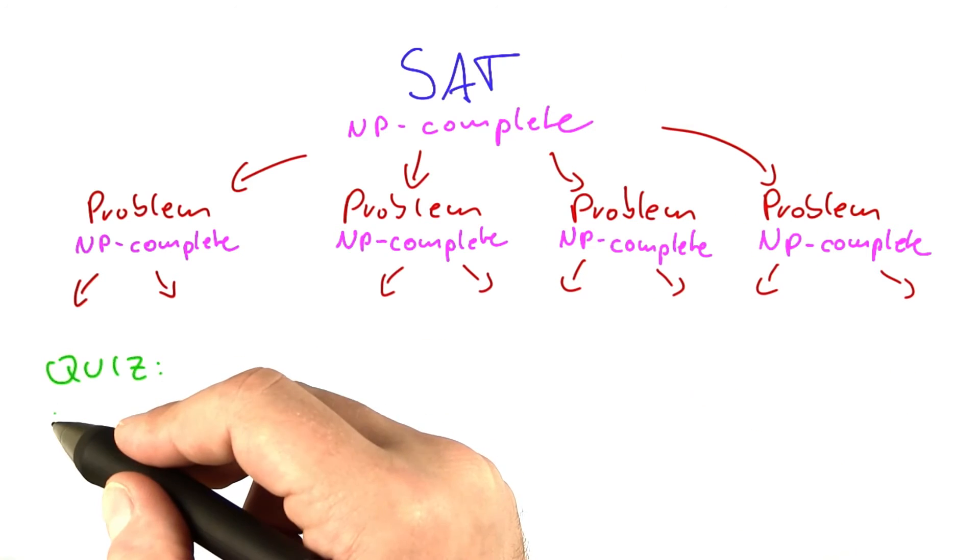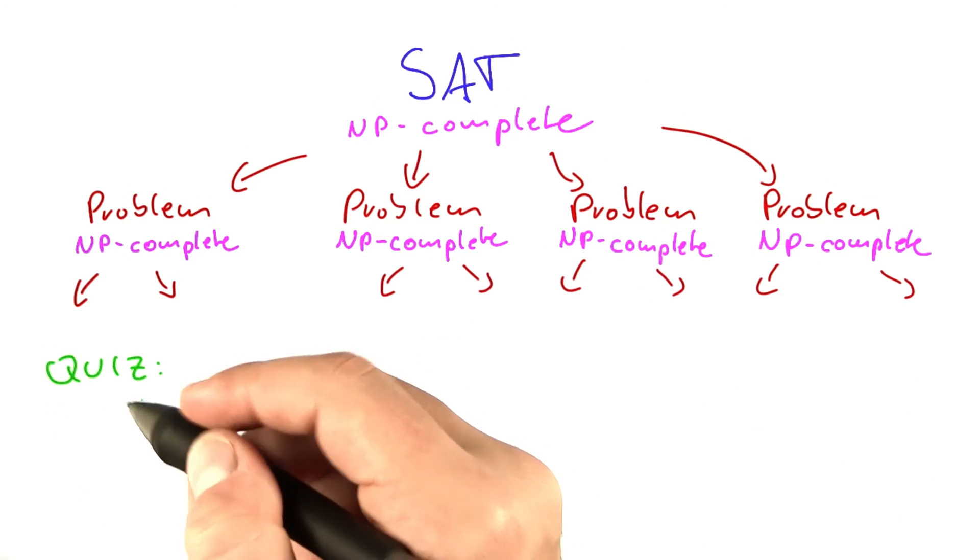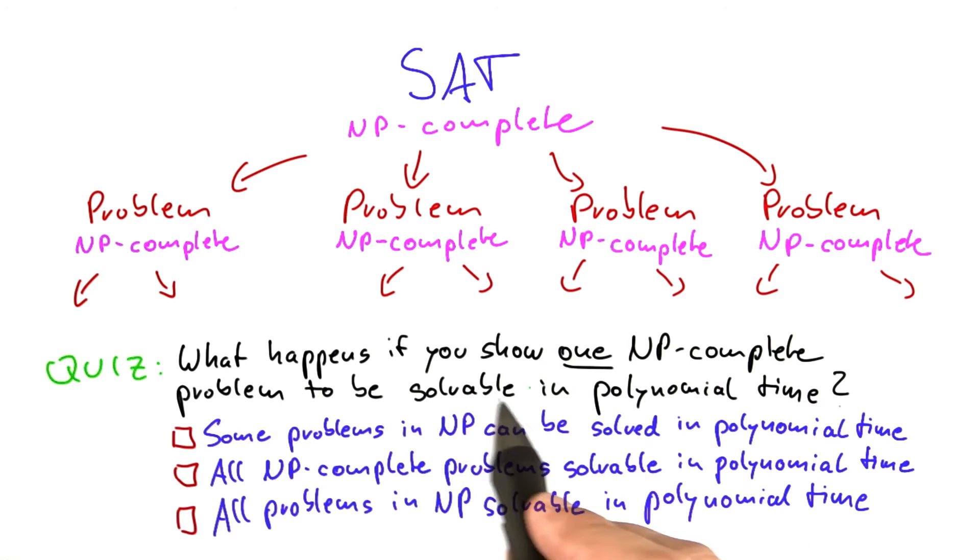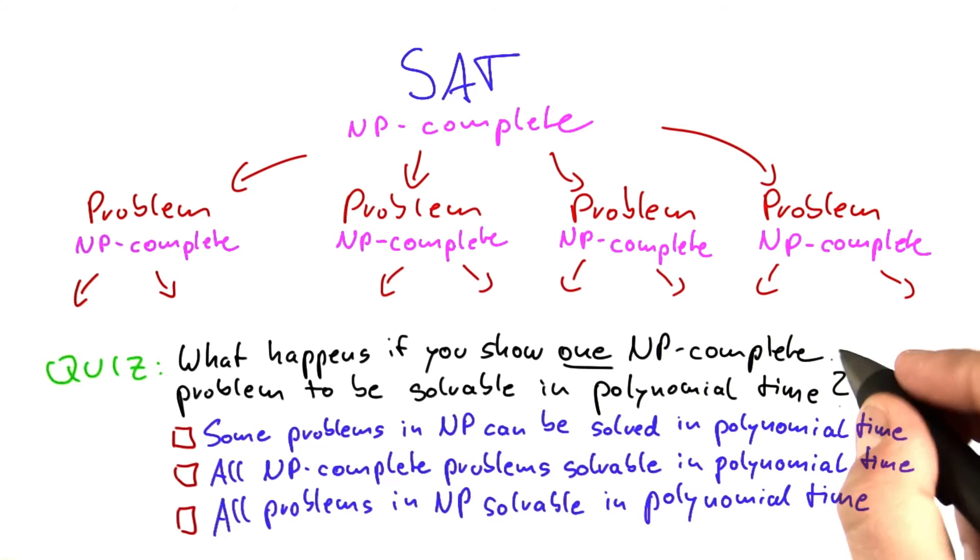So let's take one step back now with our next quiz. What happens if you show one NP-complete problem to be solvable in polynomial time? And by solvable in polynomial time, of course, I mean on a deterministic RAM.